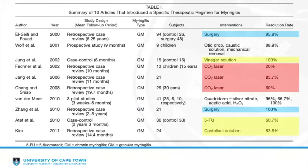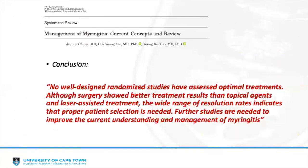This table summarizes the findings, highlighting the modality used with the respective resolution rate. In terms of topical drops, the best results were achieved with vinegar solution. Unfortunately, no studies looked at the more commonly used first-line antibiotic, antifungal, and steroid drops. The final conclusion was that no well-designed randomized studies exist to assess optimal treatment, and despite surgery showing superior outcomes, proper patient selection is needed. The authors emphasized the need for further studies to improve our understanding and management.